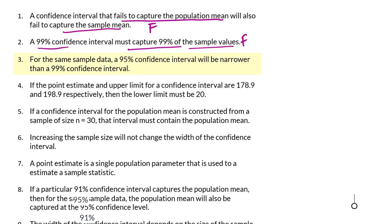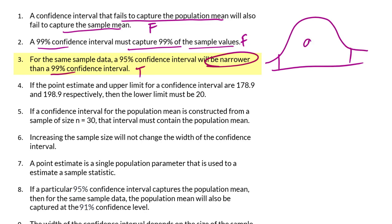Number 3: For the same sample data, a 95% confidence interval will be narrower than a 99% confidence interval. That is true. A 99% confidence interval will be wider than a 95% confidence interval. So the 99% confidence interval will contain the 95% confidence interval.